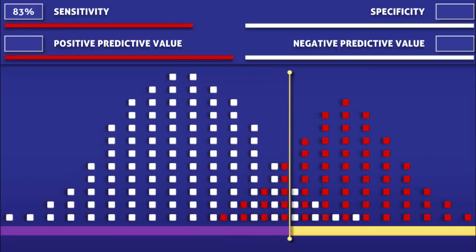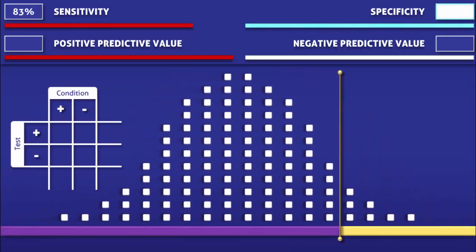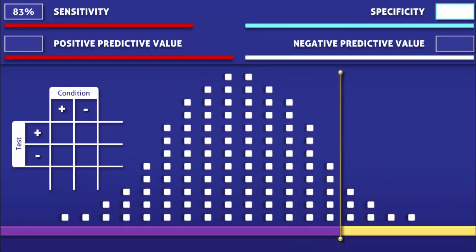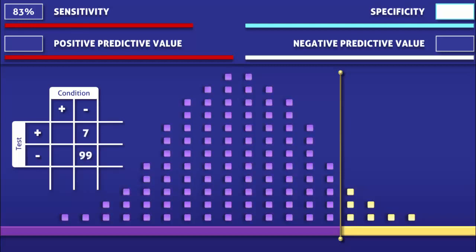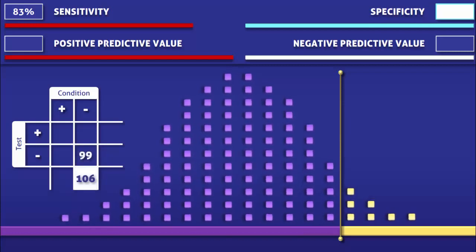Now let's move on to specificity. Since specificity only takes into consideration people without the condition, we are going to focus on the white squares. Looking at the relation of the white squares to the cutoff level, we find that there are 7 false positives and 99 true negatives. Since specificity is the proportion of people without the condition that tested negative, we calculate it by dividing 99 by 106, giving us a specificity of 94%.